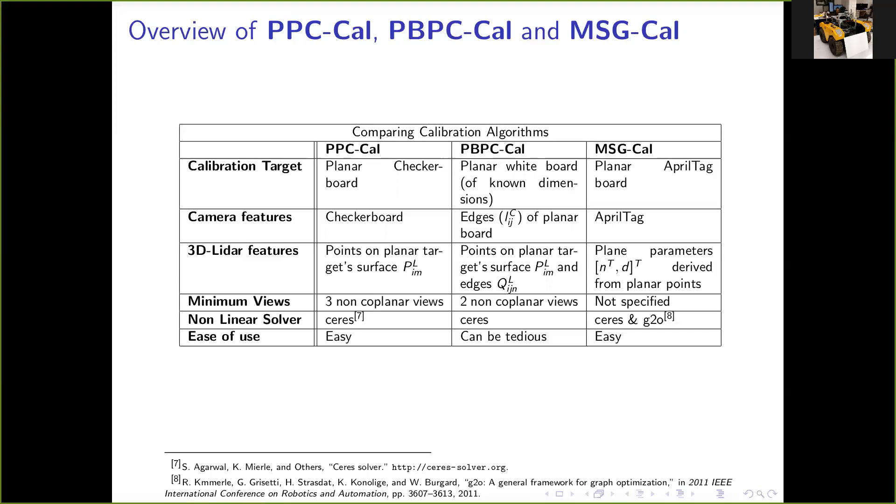Theoretically, PPC-Cal claims that the results of calibration will be observable with only three non-coplanar views, and PBPC-Cal claims that only two non-coplanar views are enough. MSG-Cal, however, makes no such claims. But it must be kept in mind that all the three methods discussed here encourage that enough views are provided to ensure robustness. Data collection in PPC-Cal and MSG-Cal is easier because only the planar points need to be detected in LIDAR. But in PBPC-Cal, we also need to detect the edges of the planar target in the LIDAR sensor, and hence, we have to hold the target in a way which makes the detection of the edges easier. Hence, it can be tedious at times.